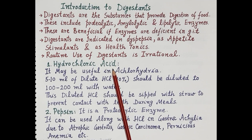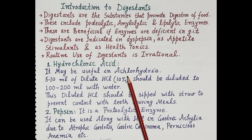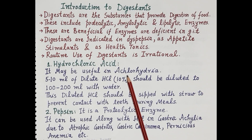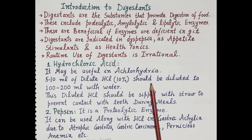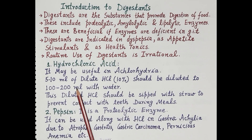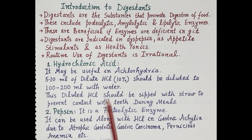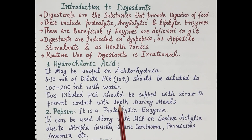The first digestant is hydrochloric acid. It may be useful in achlorhydria, that is the absence of hydrochloric acid in the gastric secretion. Hydrochloric acid is essential for the activation of pepsinogen to pepsin, and activated pepsin digests proteins. 5 to 10 ml of dilute hydrochloric acid (10%) should be further diluted with water to 100 to 200 ml, and this diluted hydrochloric acid should be sipped with a straw to prevent contact with teeth during meals.